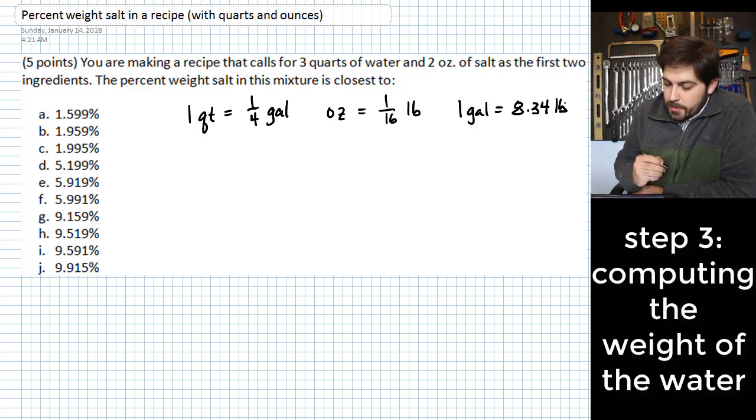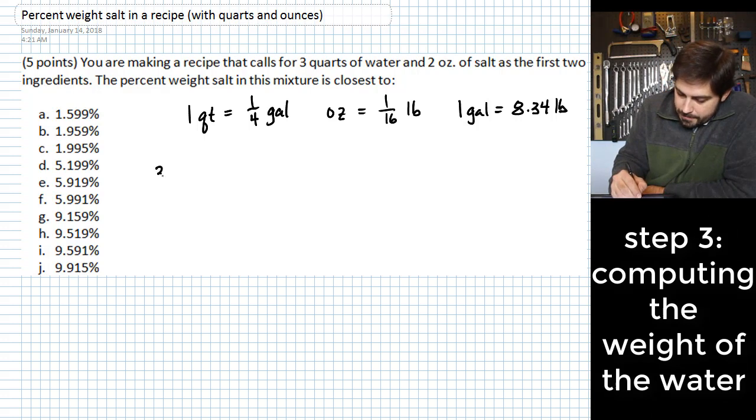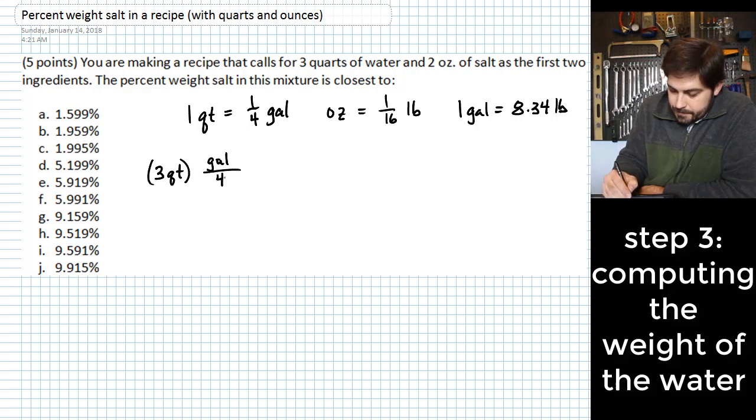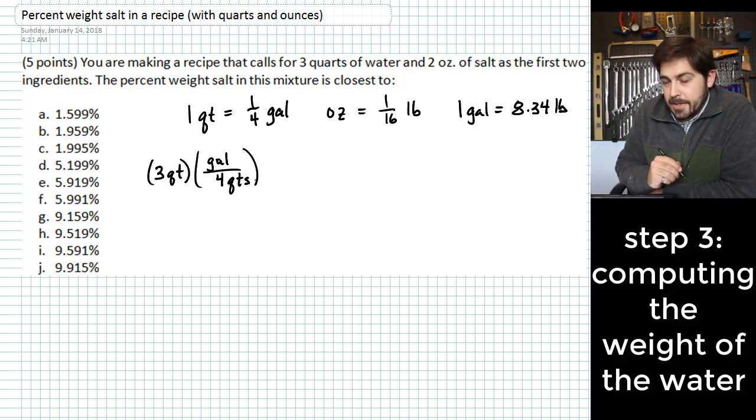So what we have first is three quarts. So what I'm doing here with the first step is I'm trying to figure out how much weight of water we have for this recipe. Three quarts. If I multiply this by one gallon for every four quarts, then I go to gallons.